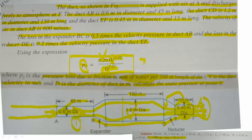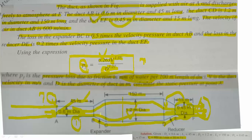We need to calculate the static pressure at point A — we have to find out what the static pressure is at point A. We have already marked all the given data in the figure and in short format. Let us try to solve this example; we need to find the pressure at inlet, meaning at A.